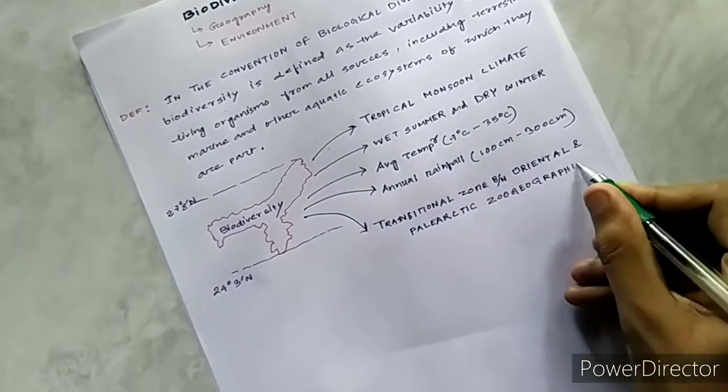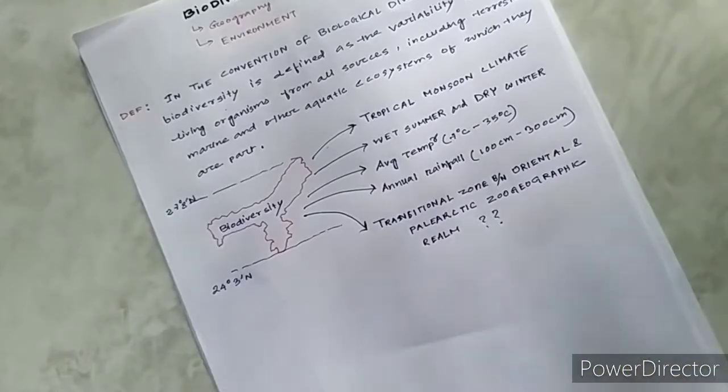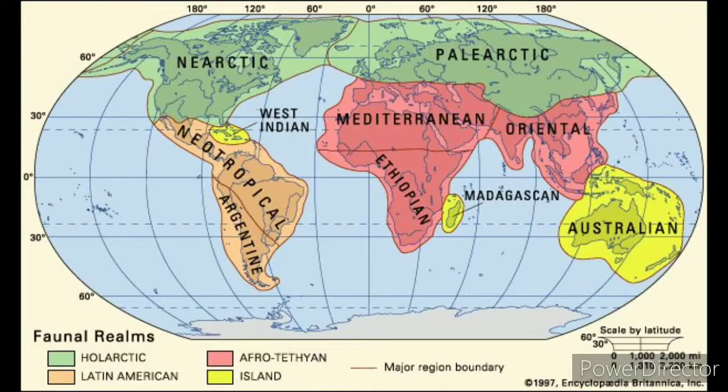Annual rainfall varies from 100 centimeters to 300 centimeters. Along with that, the region lies between the transitional zone of Oriental geographic realm and Palearctic geographic realm. On the basis of presence and absence of several organisms, Earth can be divided into some regions called geographic realms. Assam is lying in the transition zone between the Palearctic and Oriental geographic realm, thus providing a supportive habitat to various organisms.